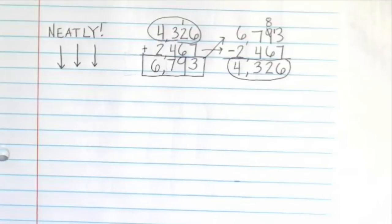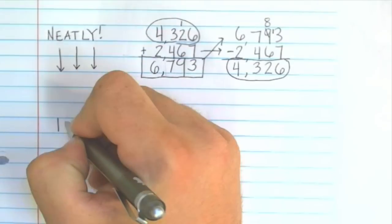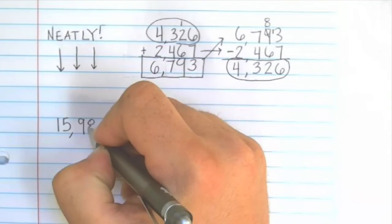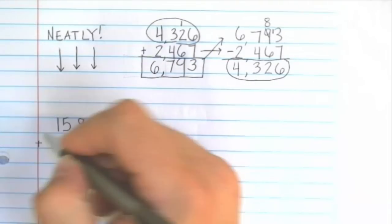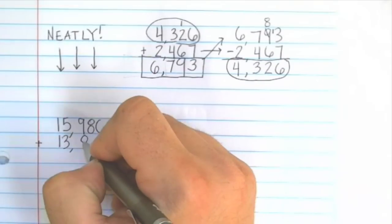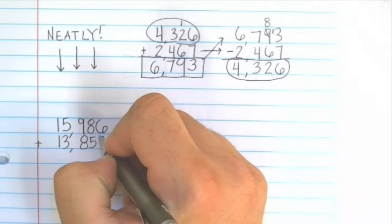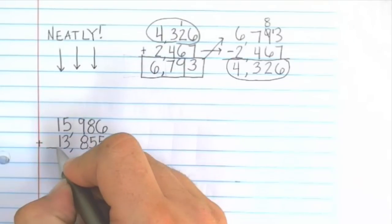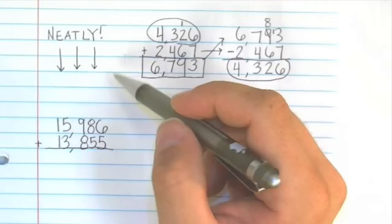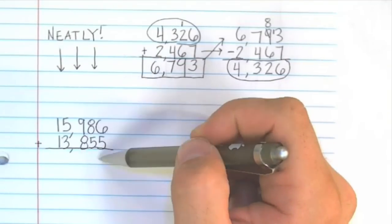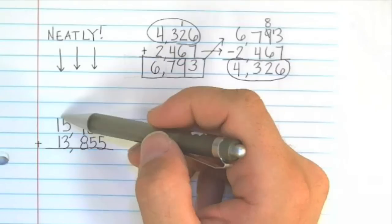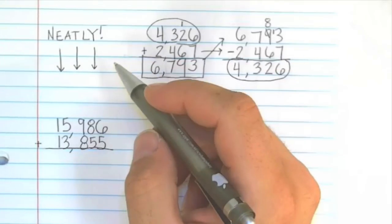Let's add an even larger number. Let's add 15,986 plus 13,855. And again, it's very easy as you're writing these large numbers, if you're not careful, to get the different places mixed up. And that will help you get an incorrect answer. So as you're writing them neatly, make sure the numbers are in the correct column all the way across. I can't emphasize this enough.